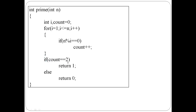If the count is equal to 2, it is a prime number — return 1. Otherwise it is not a prime number — return 0. The return value is an integer number, so return type is int.